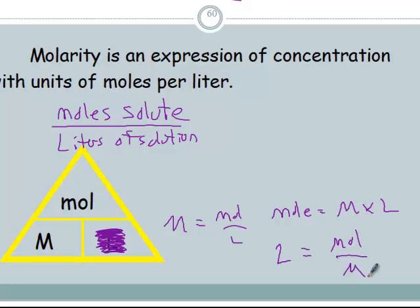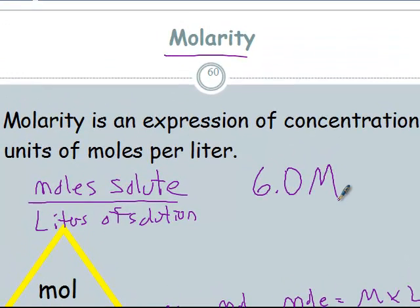Molarity is abbreviated with a unit of capital M. If you have a 6.0 capital M solution, that's a 6.0 molar solution — you sometimes see it written different ways, but we're going to use capital M. Capital M is the unit for molarity, and you say a certain molar solution: 6.0 molar.